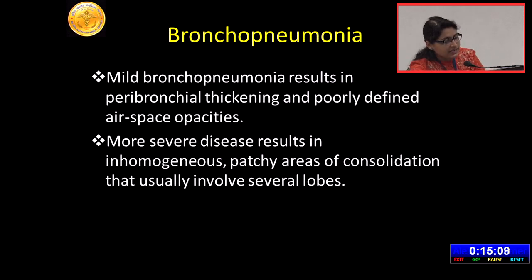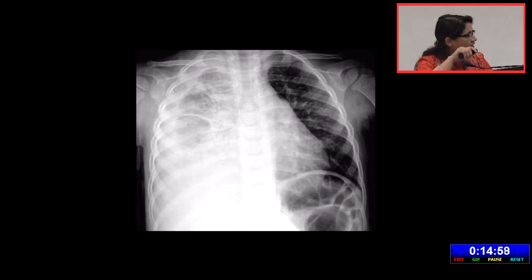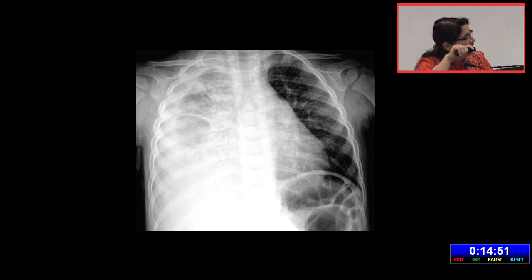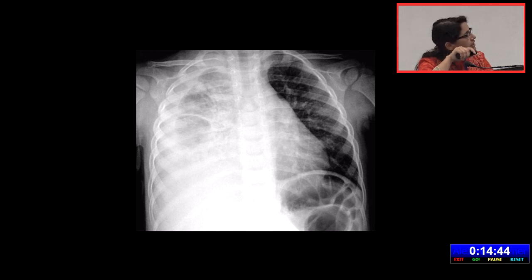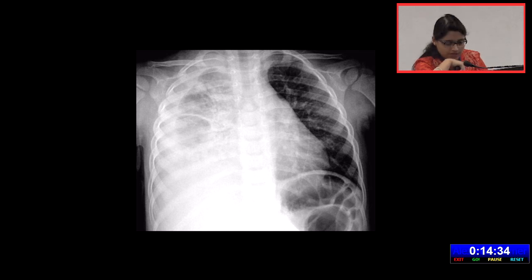Bronchopneumonia when mild presents as peribronchial thickening and poorly defined opacities, while in severe disease you can have multifocal patchy areas of consolidation in multiple lobes. In this case, the entire left lung is normal but the entire right lung — including the upper, middle, and lower zone — shows consolidation with more severe involvement of the right lower lobe. Some air bronchogram is present and there is a lot of pleural effusion. This is multilobar involvement, likely bronchopneumonia with pleural effusion.